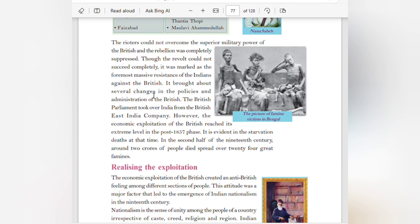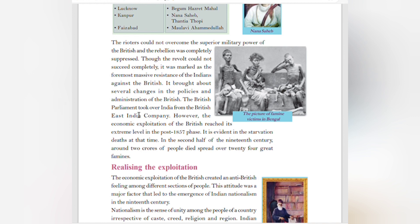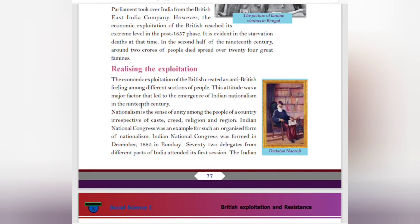Though the revolt could not fully succeed, it was marked as the foremost massive resistance of the Indians against the British and brought about several changes in British policies and administration. The British Parliament took over India from the British East India Company. However, the economic exploitation of the British reached its extreme level in the post-1857 phase, evident in starvation deaths. In the second half of the 19th century, around two crore people died spread over 24 great famines. Realizing the economic exploitation of the British created an anti-British feeling among different sections of the people. This attitude was a major factor that led to the emergence of Indian nationalism in the 19th century — nationalism being a sense of unity among the people of a country irrespective of caste, creed, religion, and region.